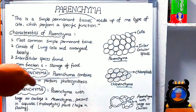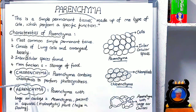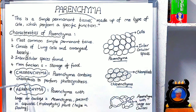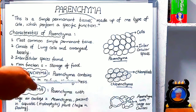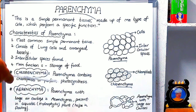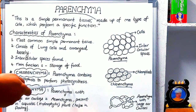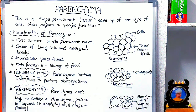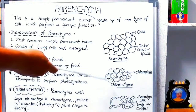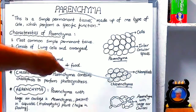Now let us look at chlorenchyma. Sometimes parenchyma contains chloroplasts — that is called chlorenchyma. Chlorenchyma means parenchyma with chloroplasts. It looks green in color because of the presence of chloroplasts. It performs photosynthesis, and through the process of photosynthesis it prepares food material. So the function of chlorenchyma is to perform photosynthesis and preparation of food material.